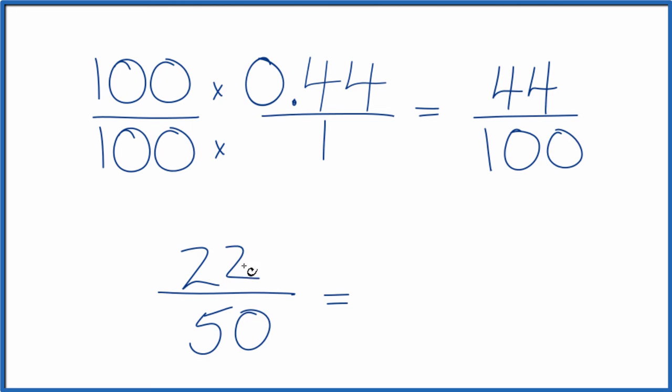We have even numbers again, so let's divide by 2 one more time. 22 divided by 2 is 11. 50 divided by 2 is 25.